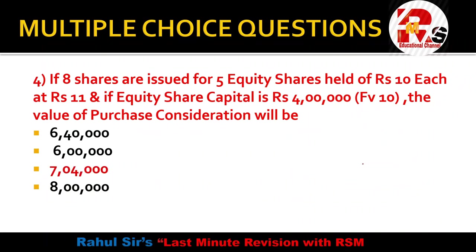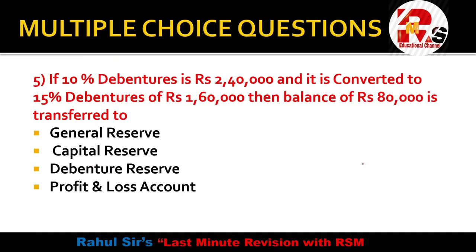Next point: If 10% debentures of Rs.2,40,000 are converted to 15% debentures of Rs.1,60,000, then the balance of Rs.80,000 is transferred to? When debentures are converted from 10% to 15%, the difference in values will be transferred to capital reserve. So Rs.80,000 will be transferred directly to capital reserve.